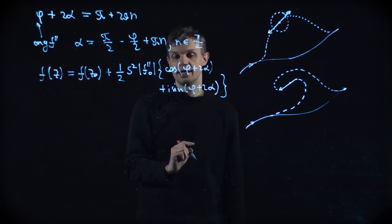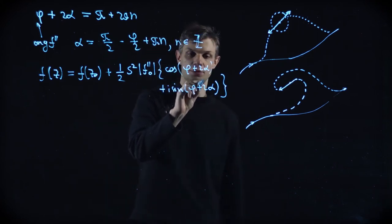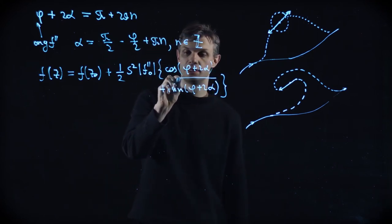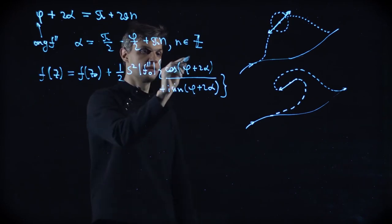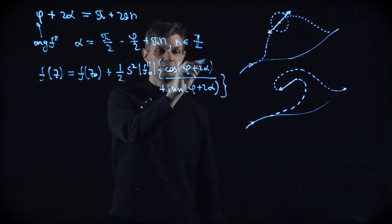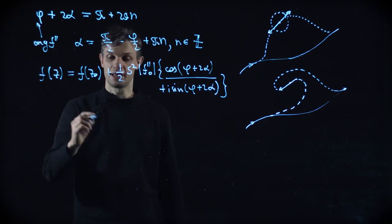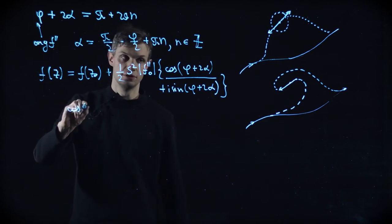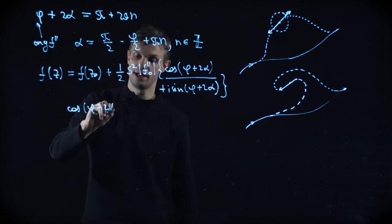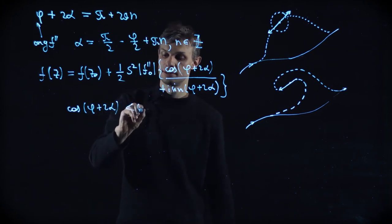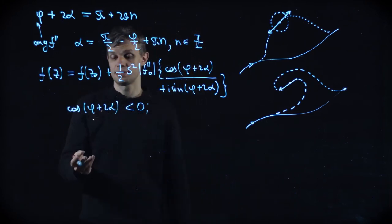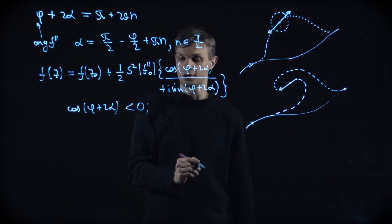Right? So we are interested in the regions where this addition to our real part, this one, is negative. So cosine of phi plus 2 alpha should be negative. Well, let's actually solve this simple trigonometric equation.